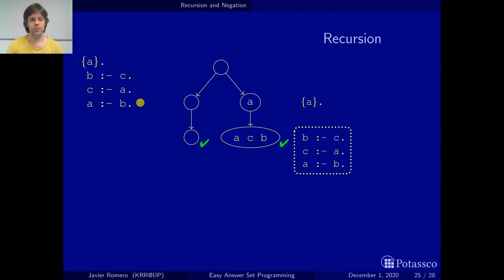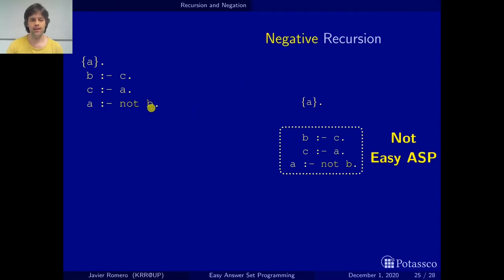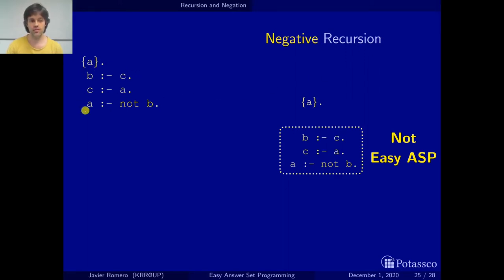Now let's see: when we negate them in the body, we are going to say that we have negative recursion. That is, we have a set of recursive rules — a set of rules such that all of them depend on all of them.